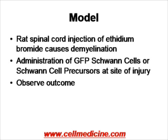In the rat model, spinal cord injury is induced by injection of the chemical ethidium bromide into the spinal cord, which causes destruction of the myelin. To heal this, there is administration of Schwann cells or Schwann cell precursors at the site of injury. Both are from GFP (Green Fluorescent Protein) transgenic donors so the authors can follow them, since they will be the only green cells in the non-green recipient.